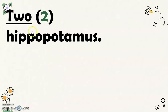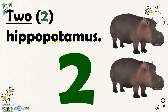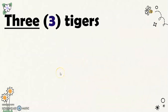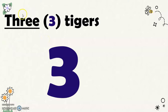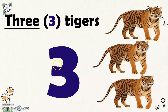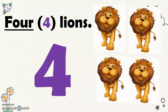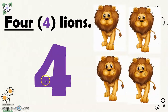Next, there were two hippopotamus in the zoo. This is the number word for two and the number symbol for two. Next, there were three tigers there. This is the number word for three and this is the number symbol for three. Next, there were four lions in the zoo. This is the number word for four and this is the number symbol for four.